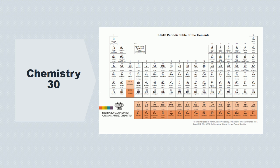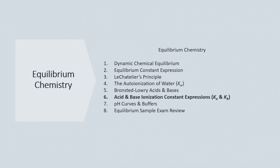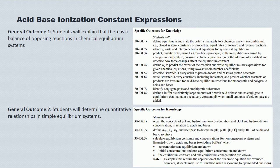Hello, and welcome to Lecture 7 in Equilibrium Chemistry. Today we're going to look at the acid and base ionization constants, referred to as Ka and Kb values.